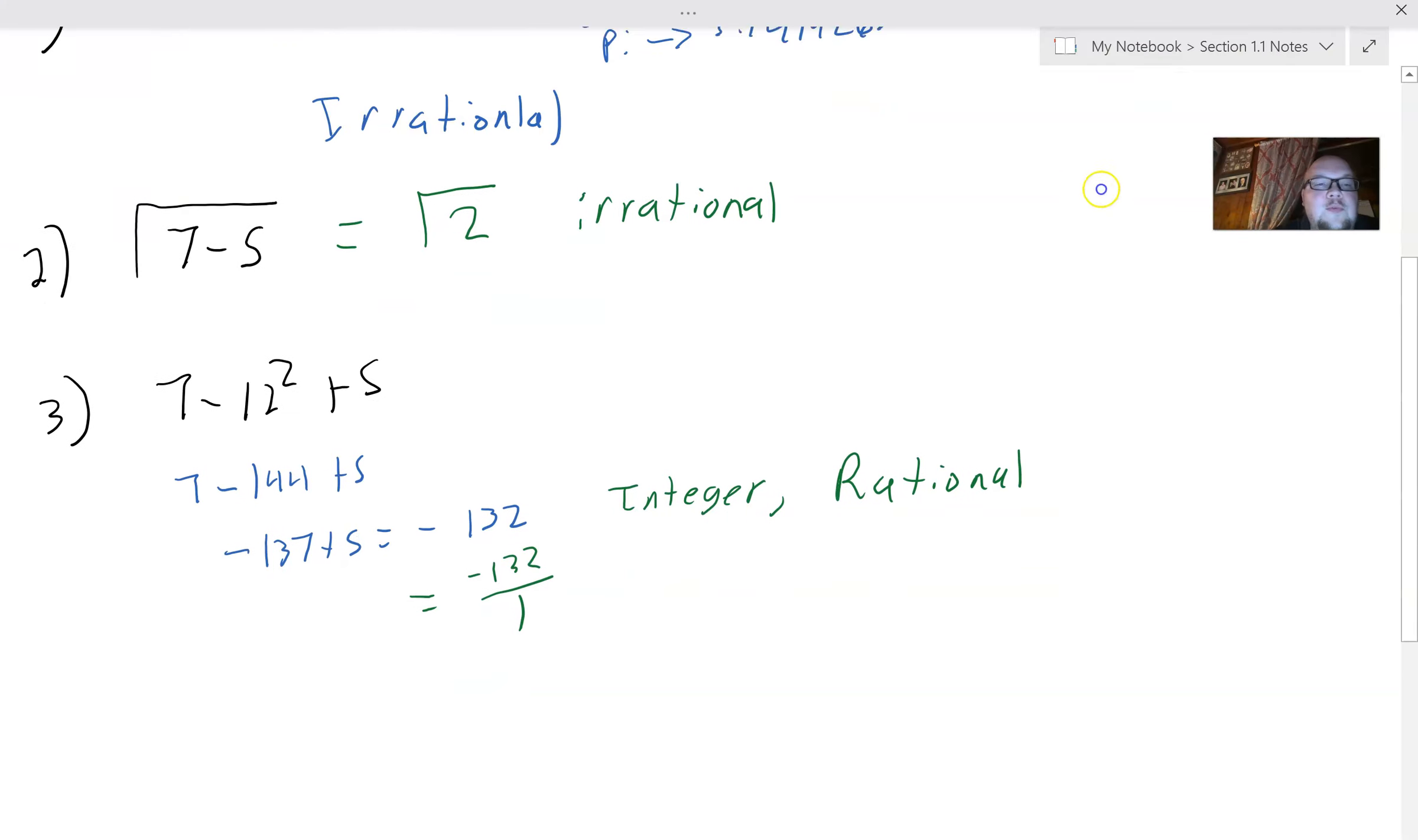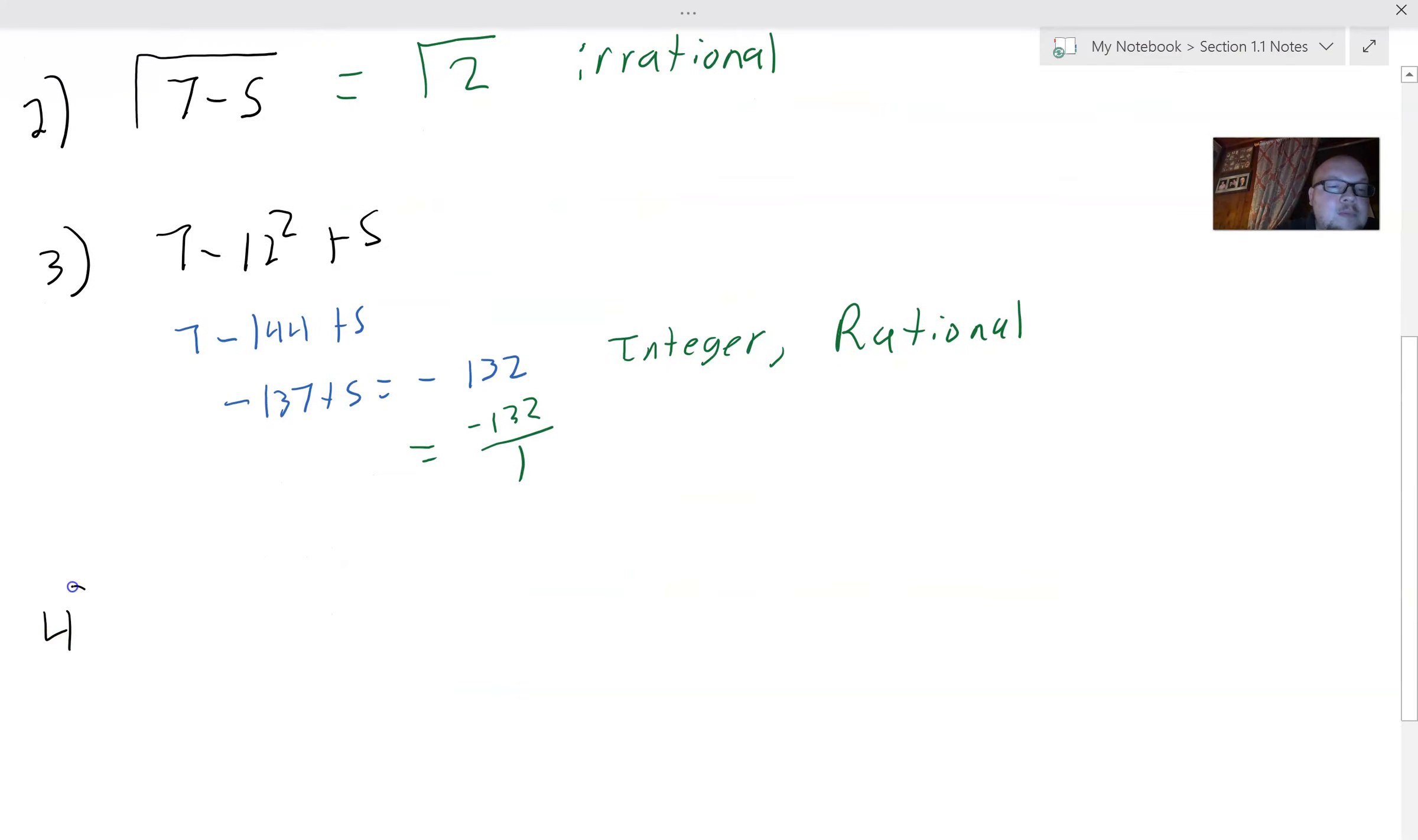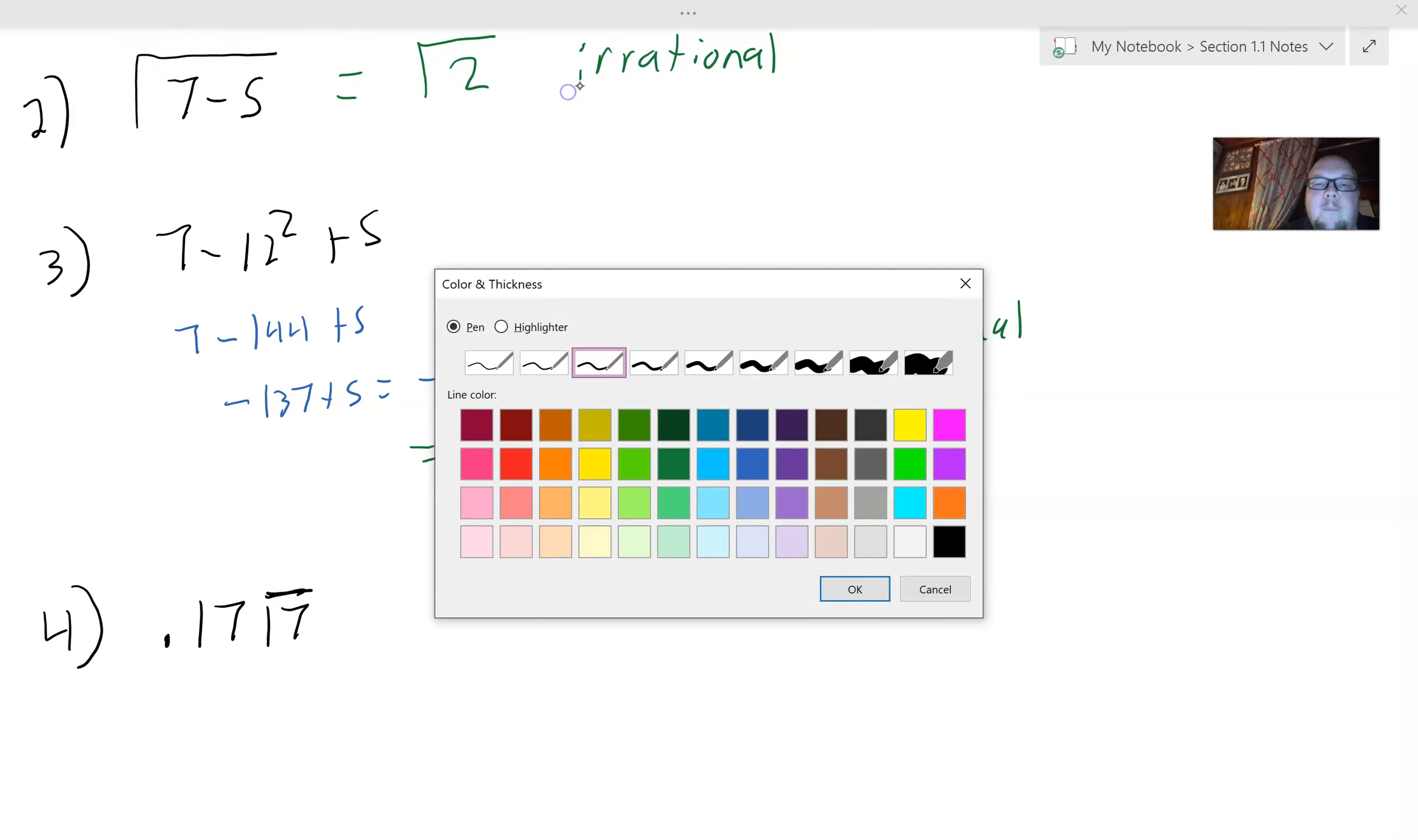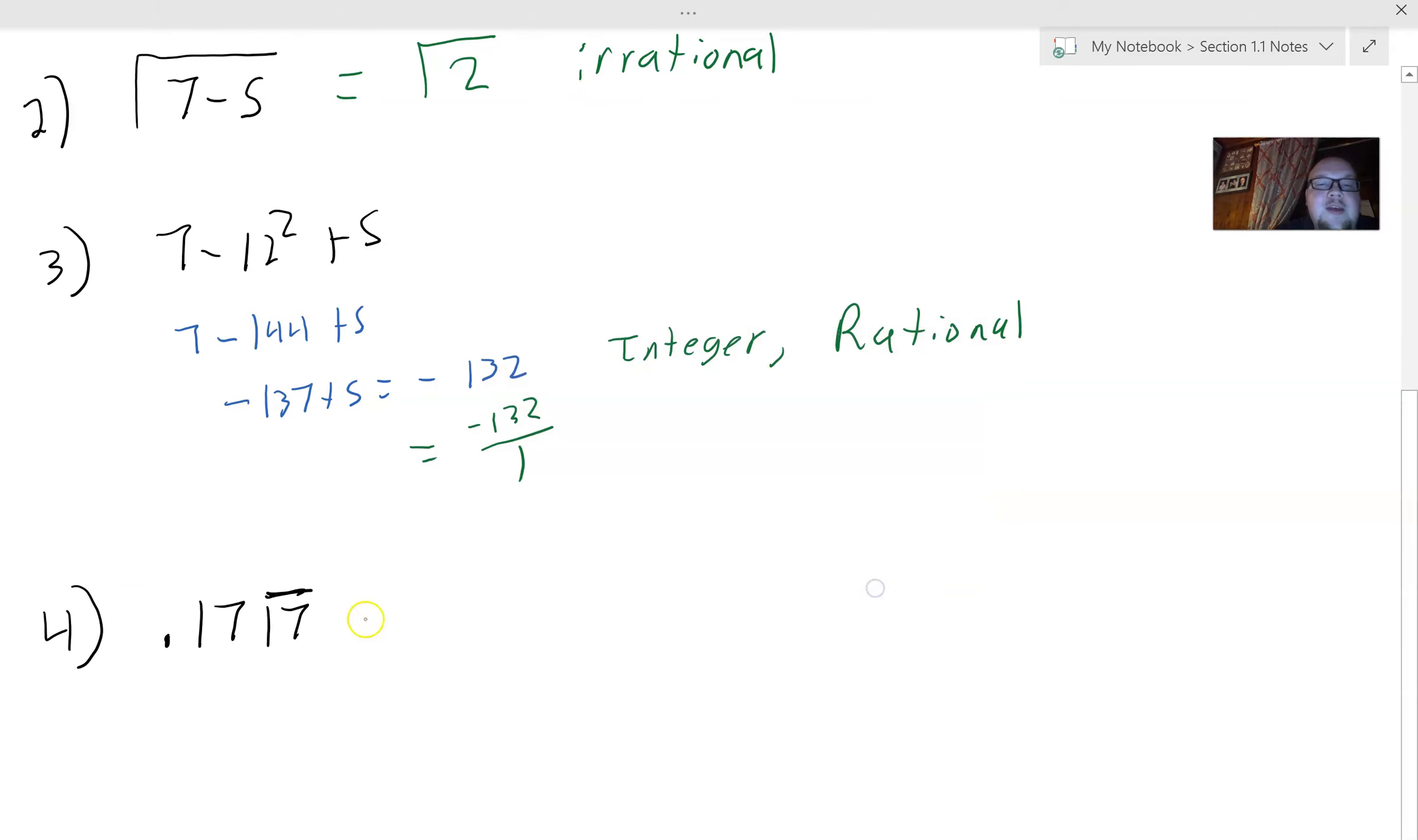And then one last one for friends and giggles. 0.1717 repeating. So we're just going to see this. This is just strictly rational because it is a decimal that repeats, which means it can be written as a fraction and that's it.